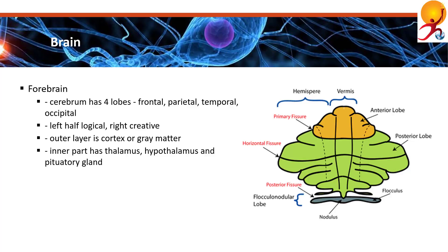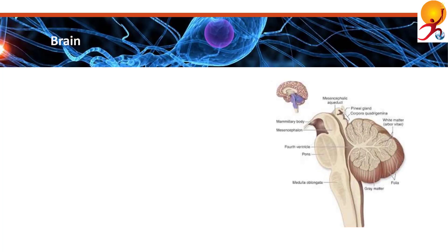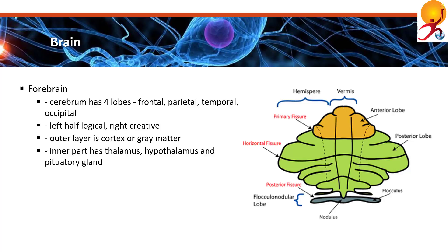The corpus callosum enables the right and the left brain to communicate. The left side is considered the logical, analytical and objective side, and the right side is thought to be more intuitive, creative and subjective. The outer layer of the cerebrum is called the cortex, also known as gray matter. Information collected by the five senses comes into the brain and from the spinal cord to the cortex, and is then directed to other parts of the nervous system for further processing.